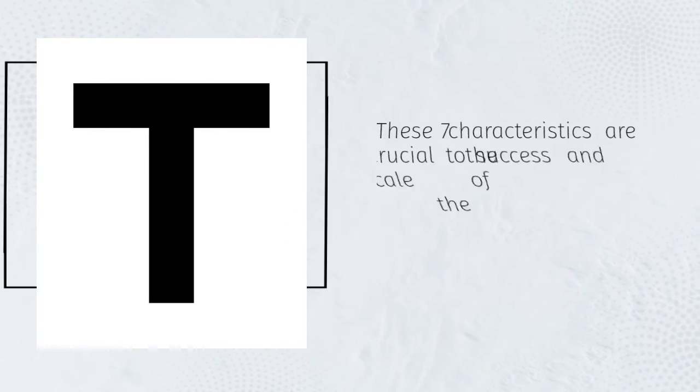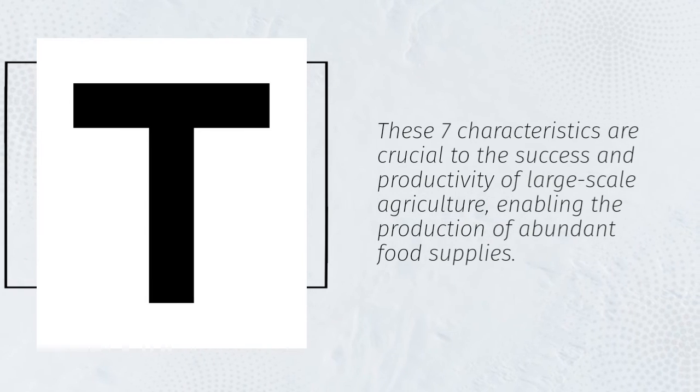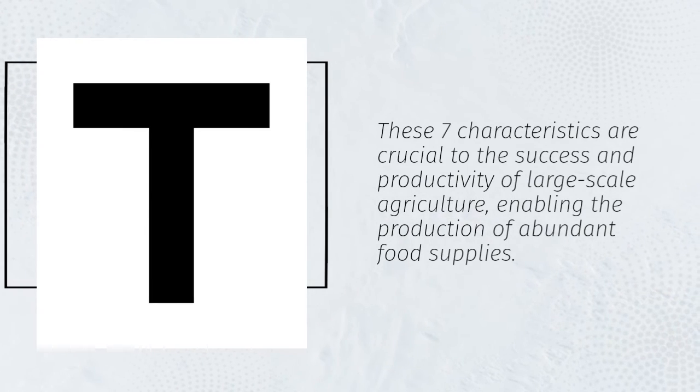These seven characteristics are crucial to the success and productivity of large-scale agriculture, enabling the production of abundant food supplies.